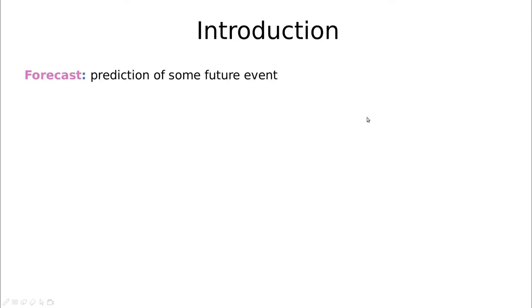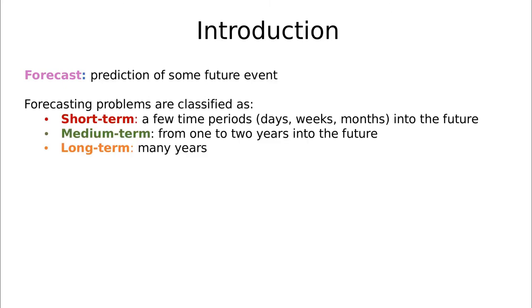So in summary, forecast is prediction about some future event. Of course we are going to classify in three types of problems as we have seen: short term problems which is sometimes what's going to happen next day or next week, if it's going to rain in a week from now, are we going to have the end of the second wave of the pandemic by next month and so on and so forth.